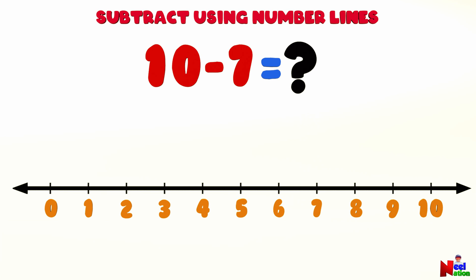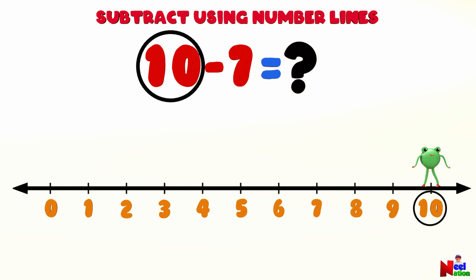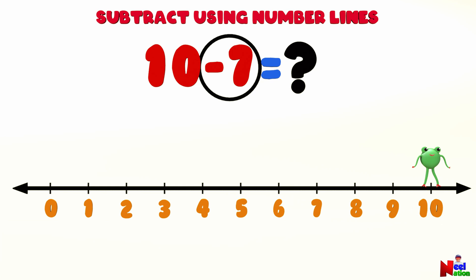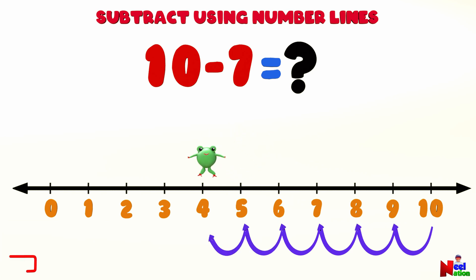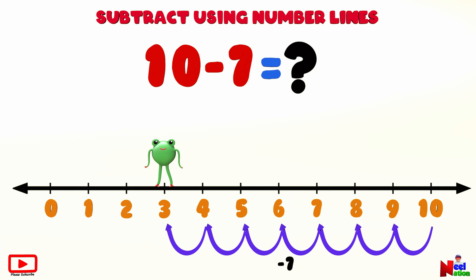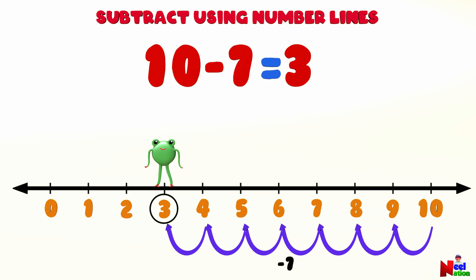What is 10 minus 7? Find the number 10 on the number line. Starting from number 10, Mr. Lutu will jump seven points backwards to the left. 1, 2, 3, 4, 5, 6, 7. Landing on number 3! 10 minus 7 equals 3. Well done! Great job!